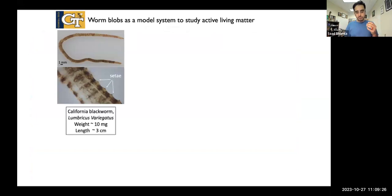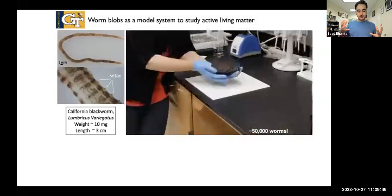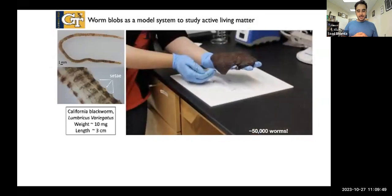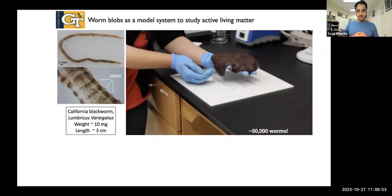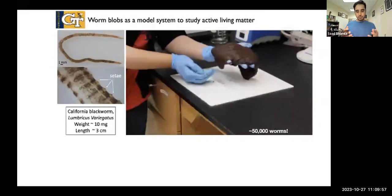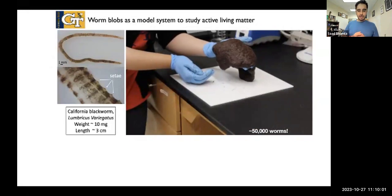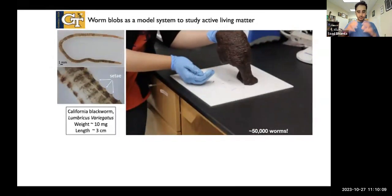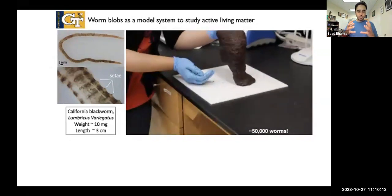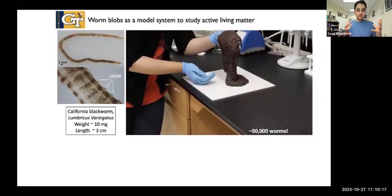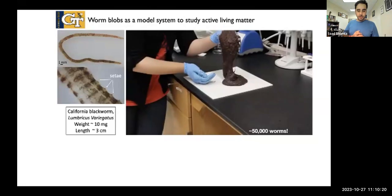When I started my lab at Georgia Tech, this was one of the first projects we started. These are Lumbriculus variegatus. They're about half a millimeter in diameter and can grow up to three centimeters in length, so it's a huge aspect ratio, greater than 100. Extremely flexible, fine worms, and they can move both in air and water. But really the magic here is if you take thousands of them. So you have 50,000 worms held by Yasmin in the lab. This is during the pandemic where everybody was baking bread and playing with dough. We were playing with this worm blob system that feels and behaves just like a living dough.